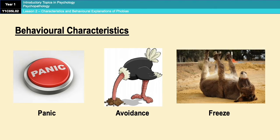Finally, there's freezing or fainting. When people encounter something they have a phobia of, they can be rooted to the spot and unable to move — frozen. In very extreme cases, people might even faint. Interestingly, the freezing and fainting response is an evolutionary characteristic, coming from animals that faint, play dead, or freeze when encountering a predator, because the predator might then think they are dead and leave them alone. Any two or three of these behavioural characteristics are sufficient for exam purposes.